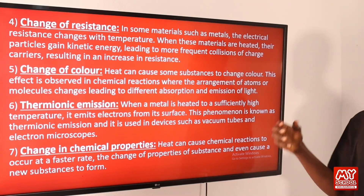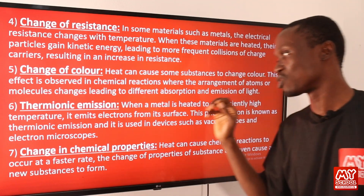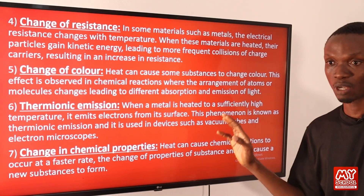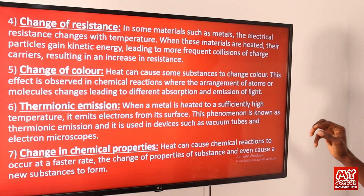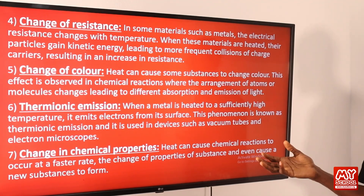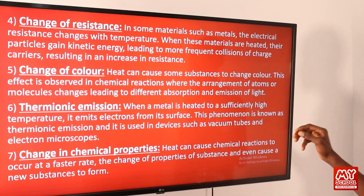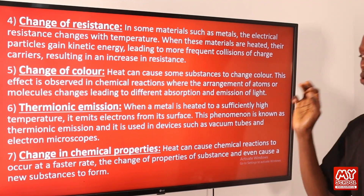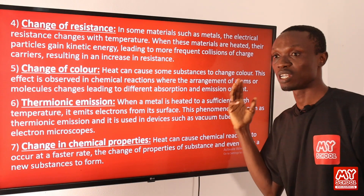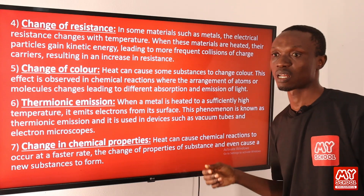The sixth effect is thermionic emission. When a metal is heated to a sufficiently high temperature, it emits electrons from its surface. This phenomenon is referred to as thermionic emission and is used in devices such as vacuum tubes and electron microscopes. The seventh effect is change in chemical properties. Heat can cause chemical reactions to occur at a faster rate, change the properties of a substance, and even cause a new substance to form.